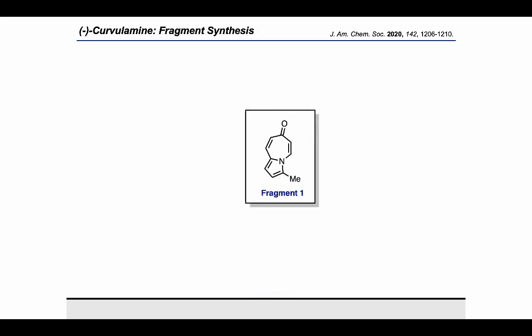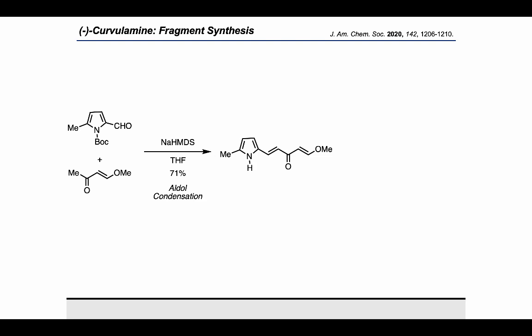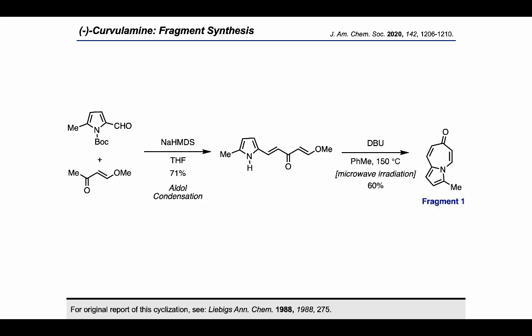First, let's take a look at fragment 1 and see how that got put together. Starting from a Boc-protected pyrrole bearing an aldehyde at the 2-position, they carried out an aldol condensation using this enone partner. Then they found that treating the substrate with DBU at 150 degrees under microwave irradiation allowed the cyclization to produce fragment 1.